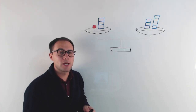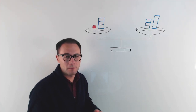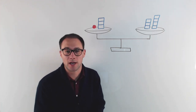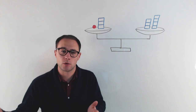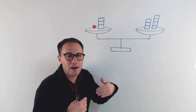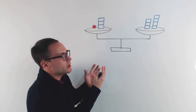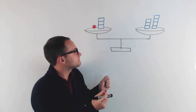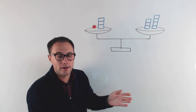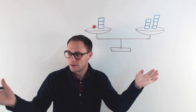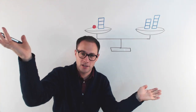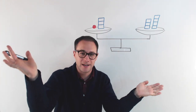Before we get into example number two, I want to talk a little bit about equations. An equation has an equal sign where one side is equal to another side — it's different than an expression. A really good way to give an example of equations is with a scale. A scale has one side equal to another. If they're not equal, the scale is going to show that and tilt.